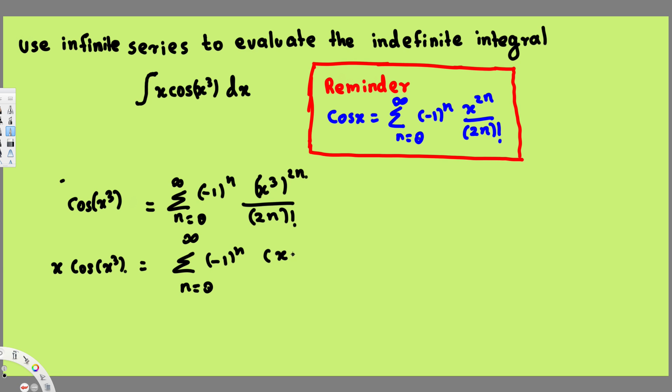If I combine this one, that's going to give us x^(6n). And then in the denominator we are going to have (2n)!.